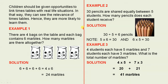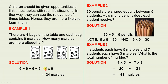Example 1. There are 4 bags on the table and each bag contains 6 marbles. How many marbles are there altogether? So there are the bags, 6 marbles in each. The solution: 6 plus 6 plus 6 plus 6 is 4 times 6, which is 24 marbles.